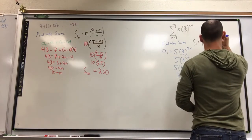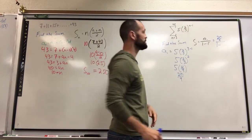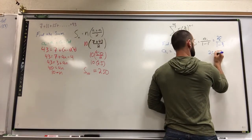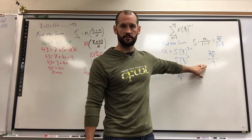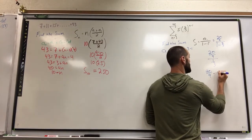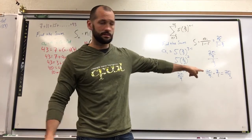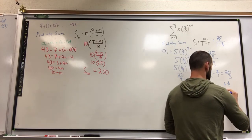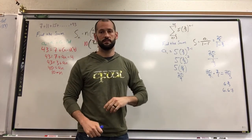Plug it in: 20 ninths over 1 minus my ratio. My common ratio is whatever's being raised to the exponent — it is 2 thirds. When I take 1 minus 2 thirds, I still have 20 ninths up top and we're going to be left with 1 third. Don't give me that as your final answer — that is a quadruple decker. When you're dividing by a fraction, you multiply by the reciprocal, which gives me 20 over 9 times 3 over 1, leaving me with 20 over 3. I'll accept that, or as a mixed number 6 and 2 thirds, or the decimal rounded to 6.67. Any of these three answers would be accepted for the sum of an infinite geometric series.